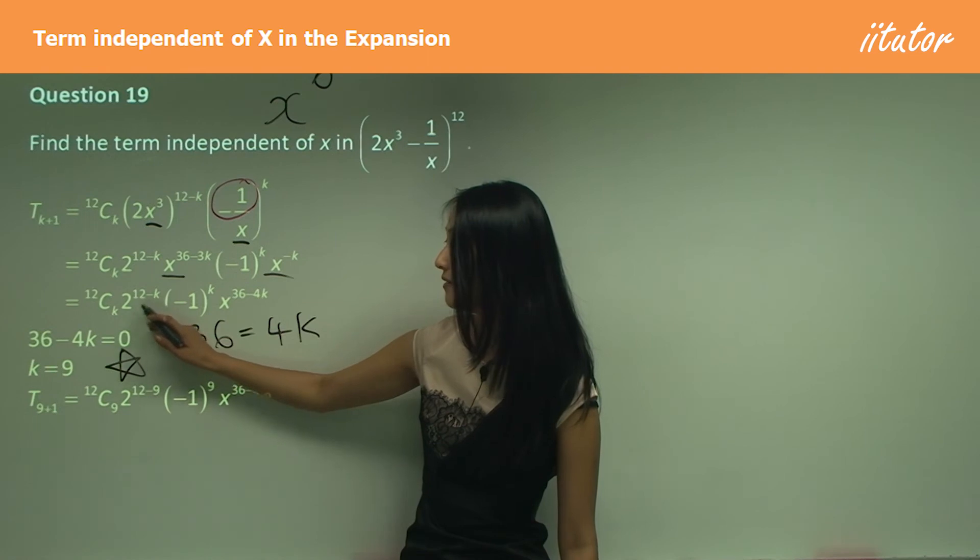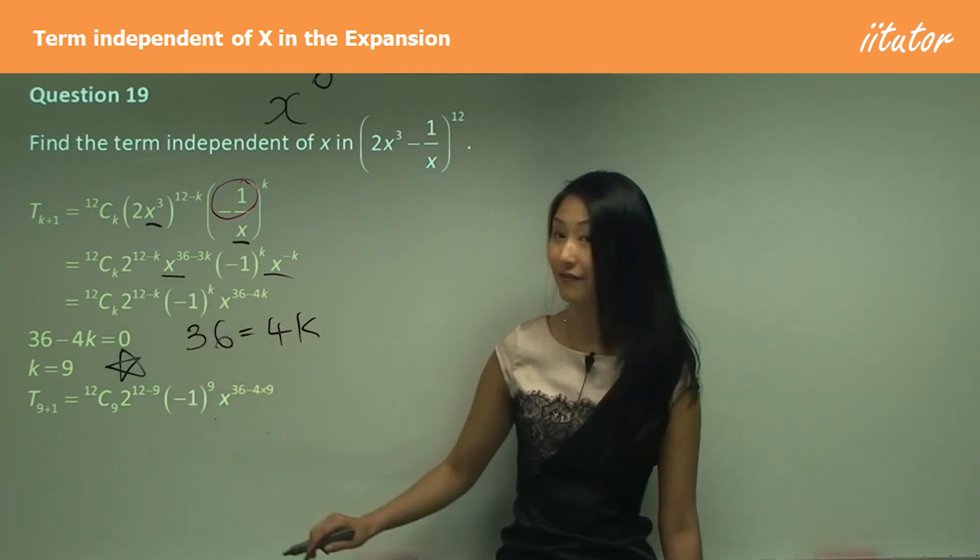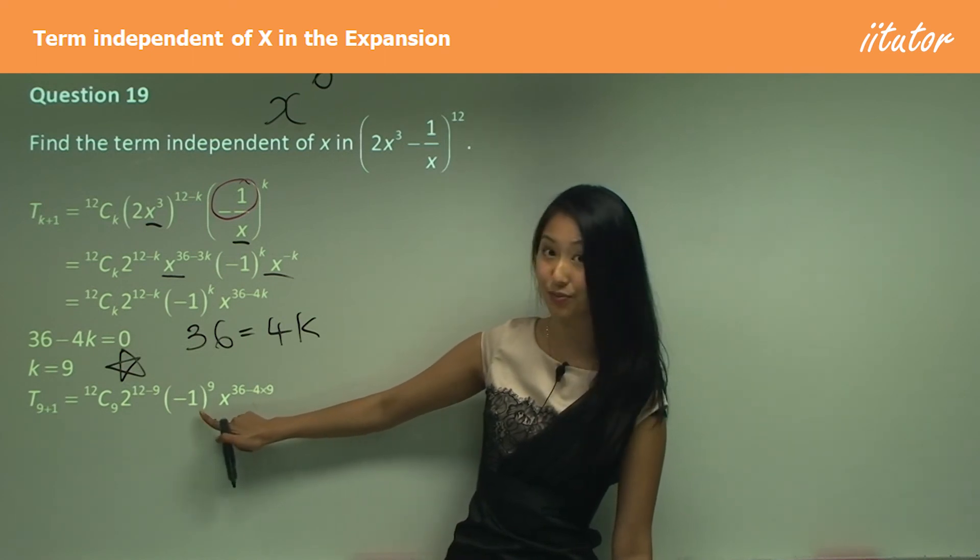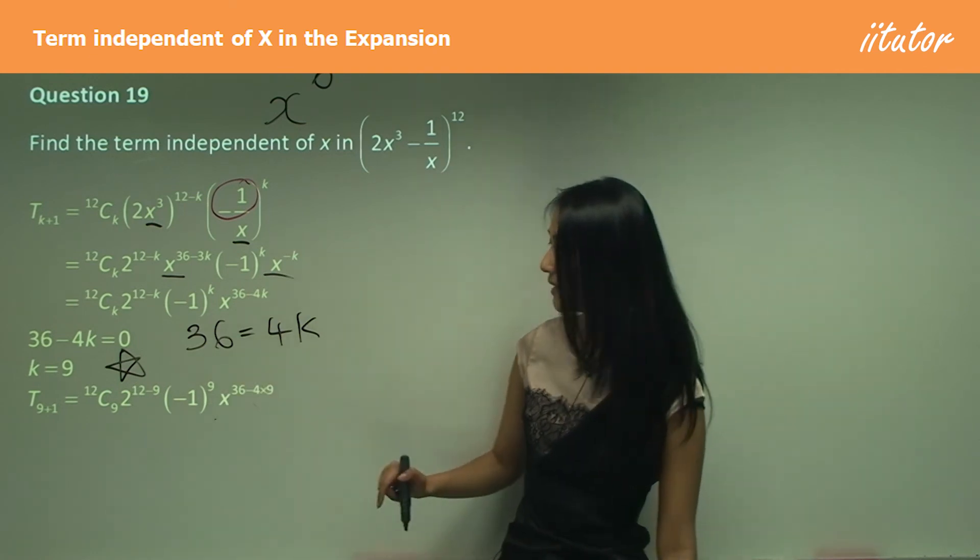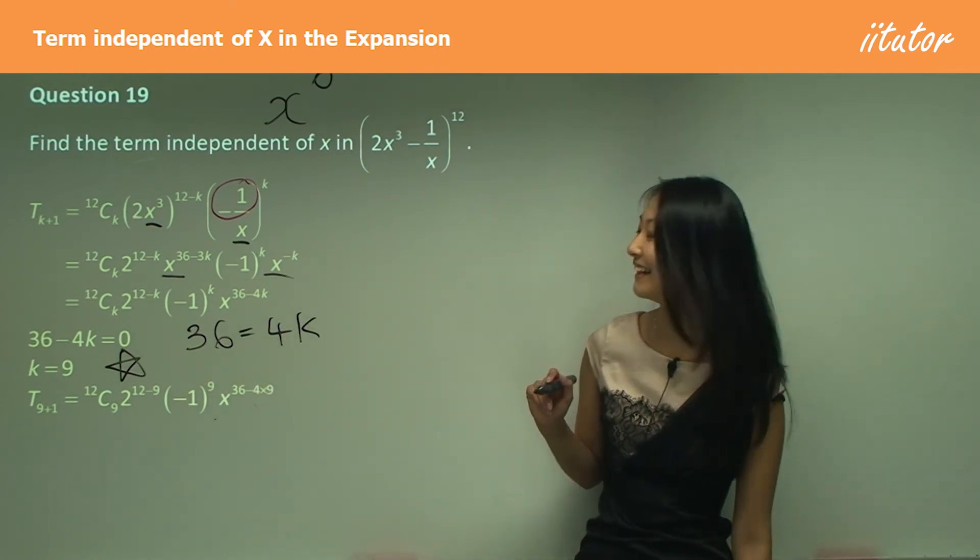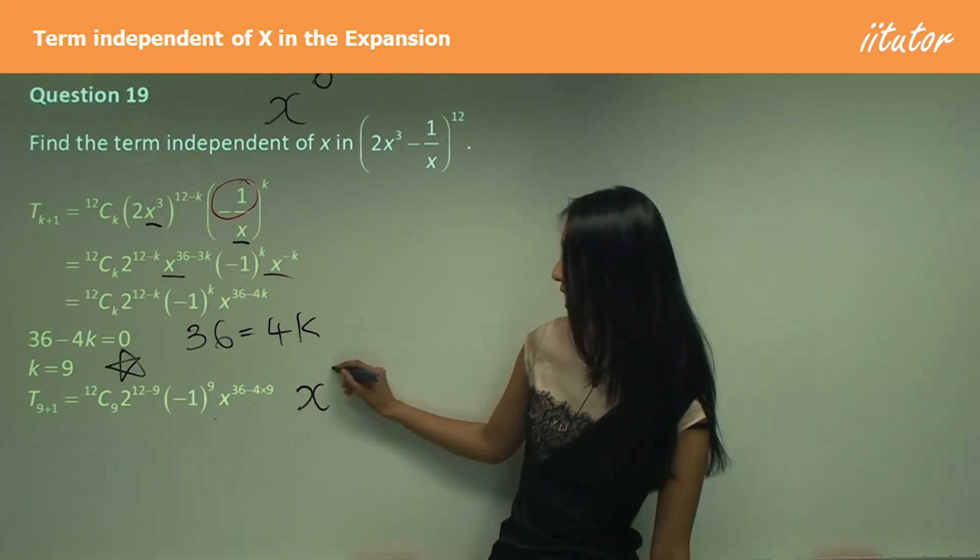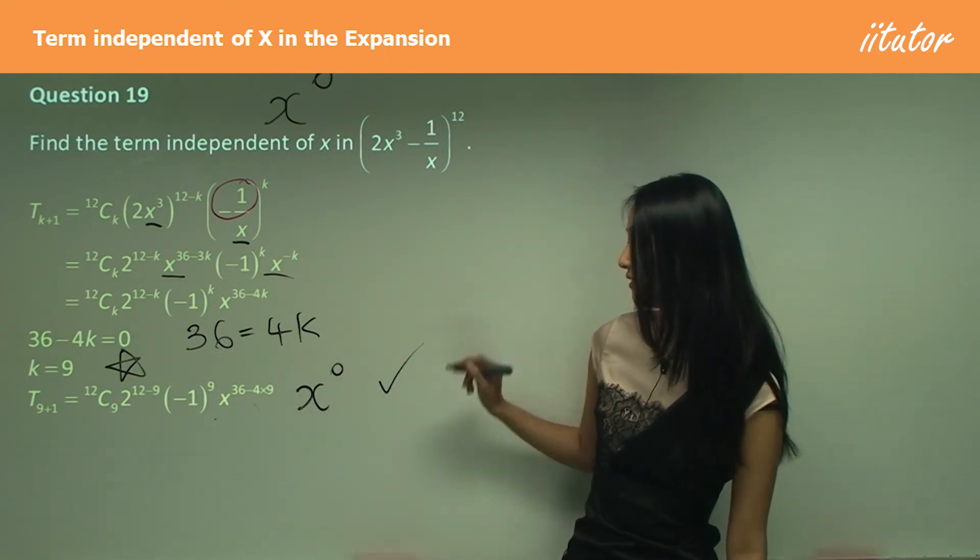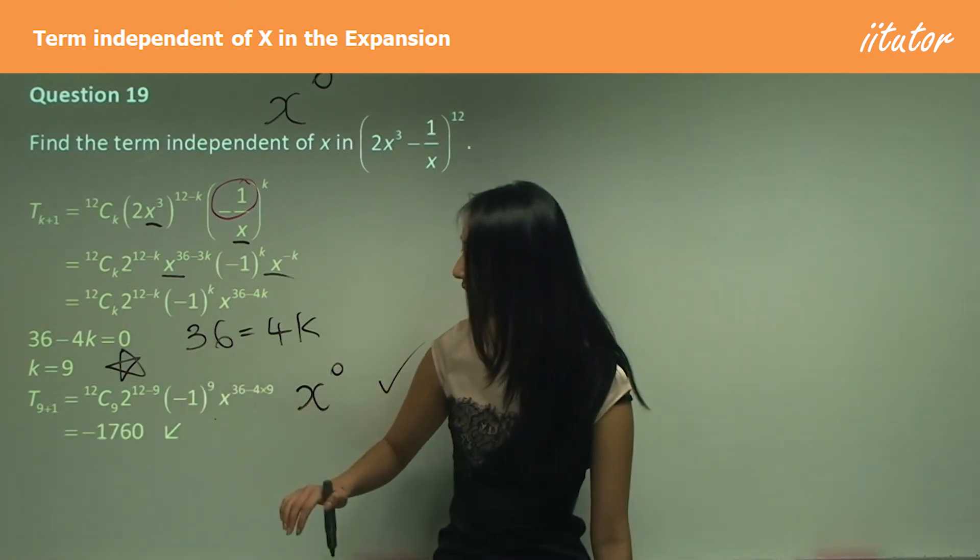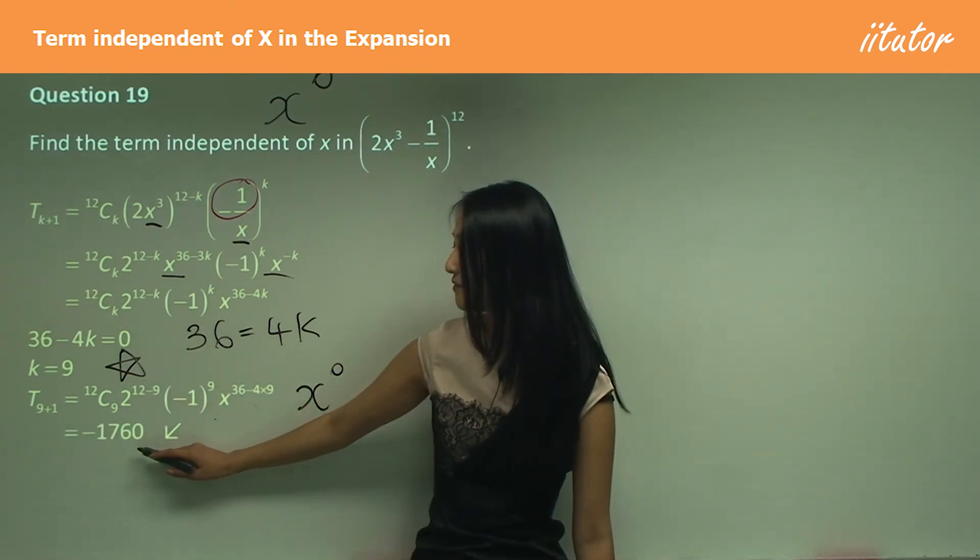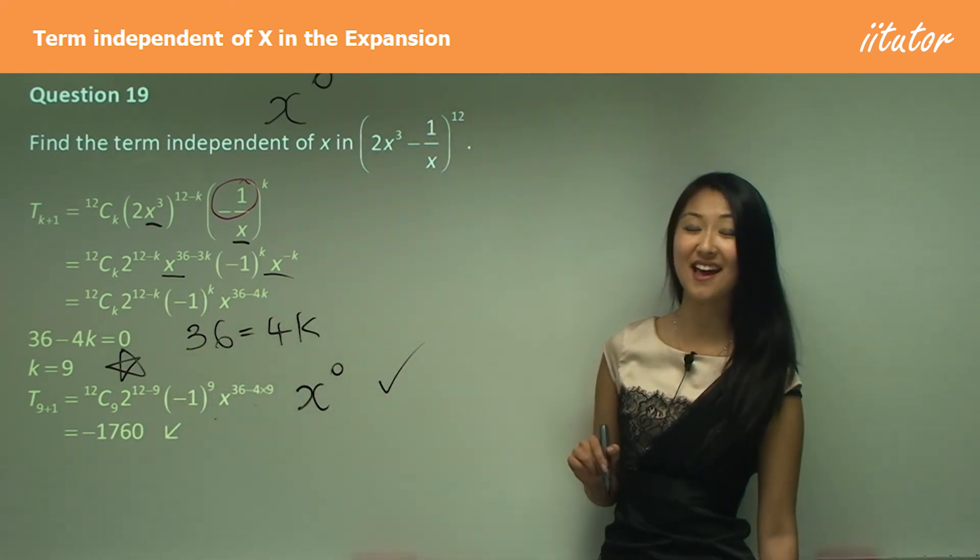12C9 times 2^(12-9) times (-1)^9. You can see why that bracket is really important—if it's even the negative goes away, whereas here we keep the negative. Finally we have 36 - 36, so we have x^0. That's a way of checking. Pop that into your calculator and we get negative 1760 as your term independent of x.